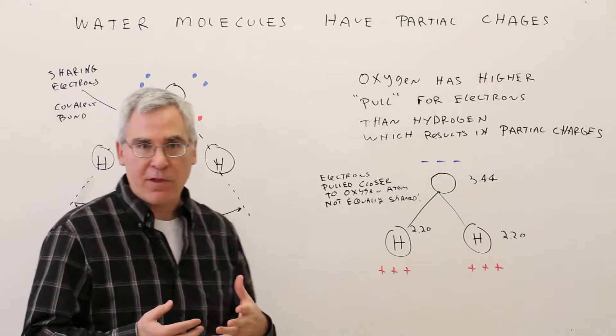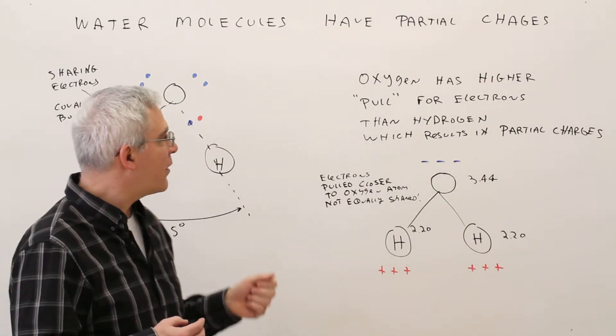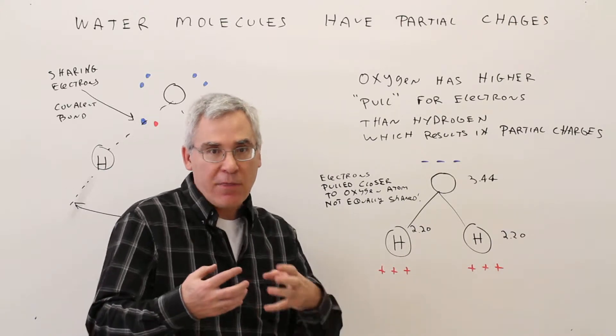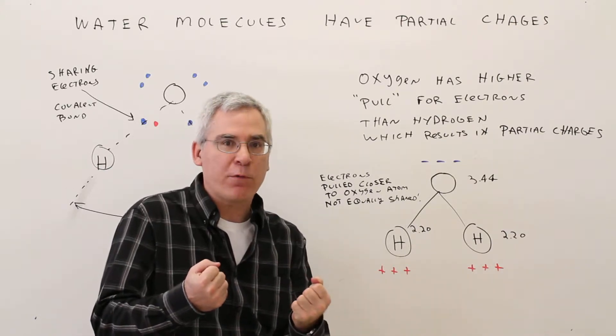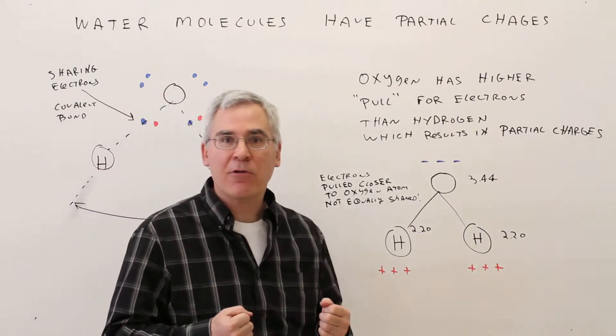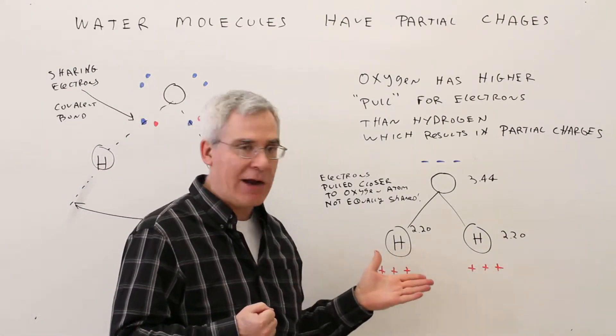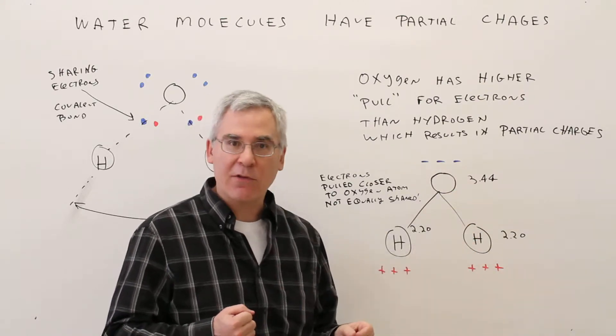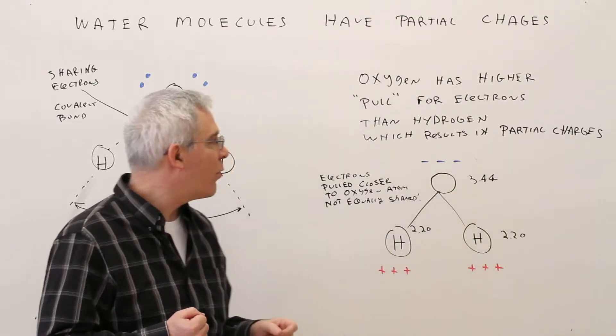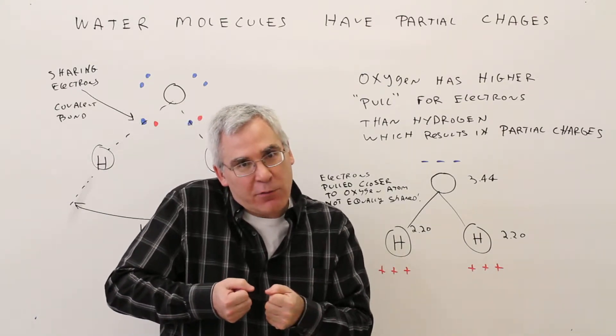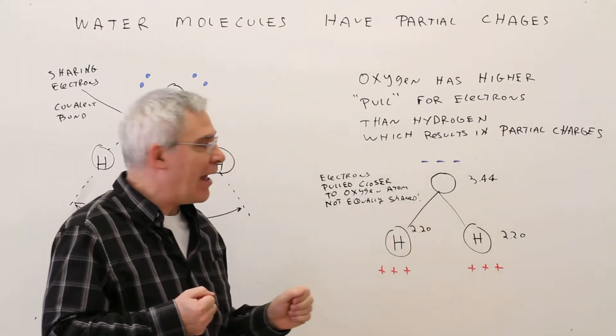One more thing to understand is that different atoms have different electronegativities. That's their pulling force for electrons. Oxygen has a higher electronegativity than hydrogen. Oxygen has 3.44, hydrogen has 2.20. So what that means is oxygen is pulling the electrons closer to those atoms than the hydrogen atoms.